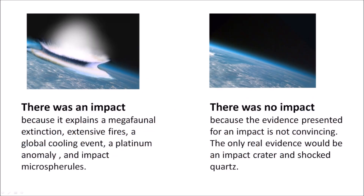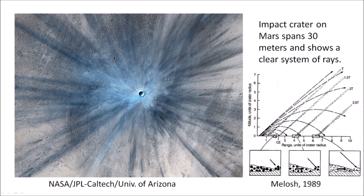Proponents of the Younger Dryas Impact Hypothesis state there was an impact because it explains megafaunal extinction, extensive fires, a global cooling event, a platinum anomaly, and impact microspherules. Opponents say there was no impact because the evidence is not convincing, and that the only real evidence would be an impact crater and shocked quartz. This impasse can only be overcome with additional evidence, and although opponents demand a crater and shocked quartz, there is another characteristic of impacts that may provide support for the YDIH.